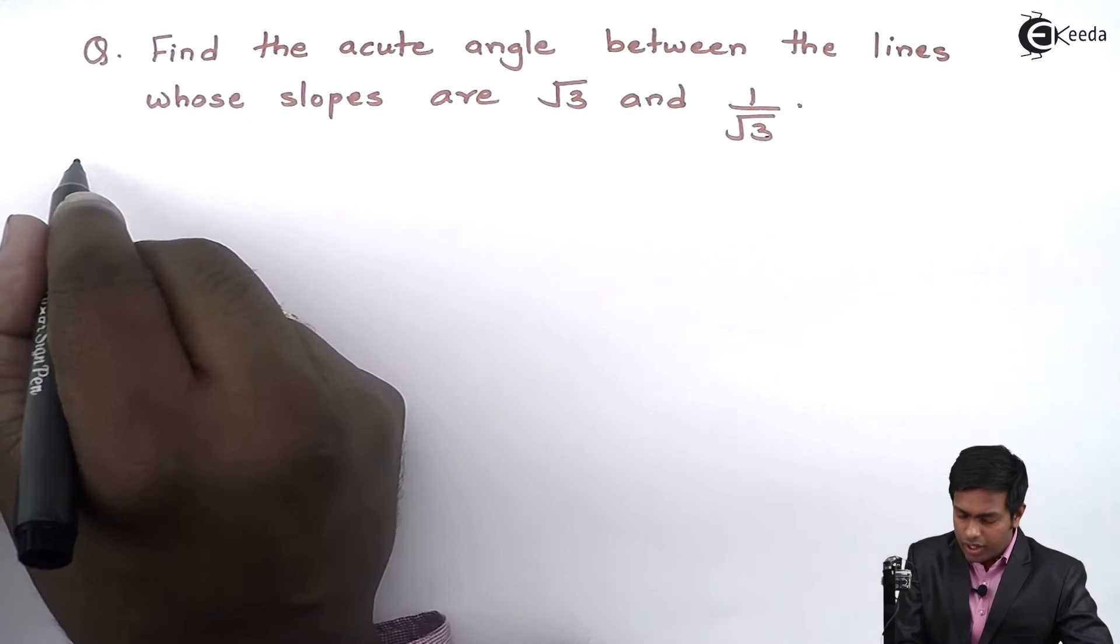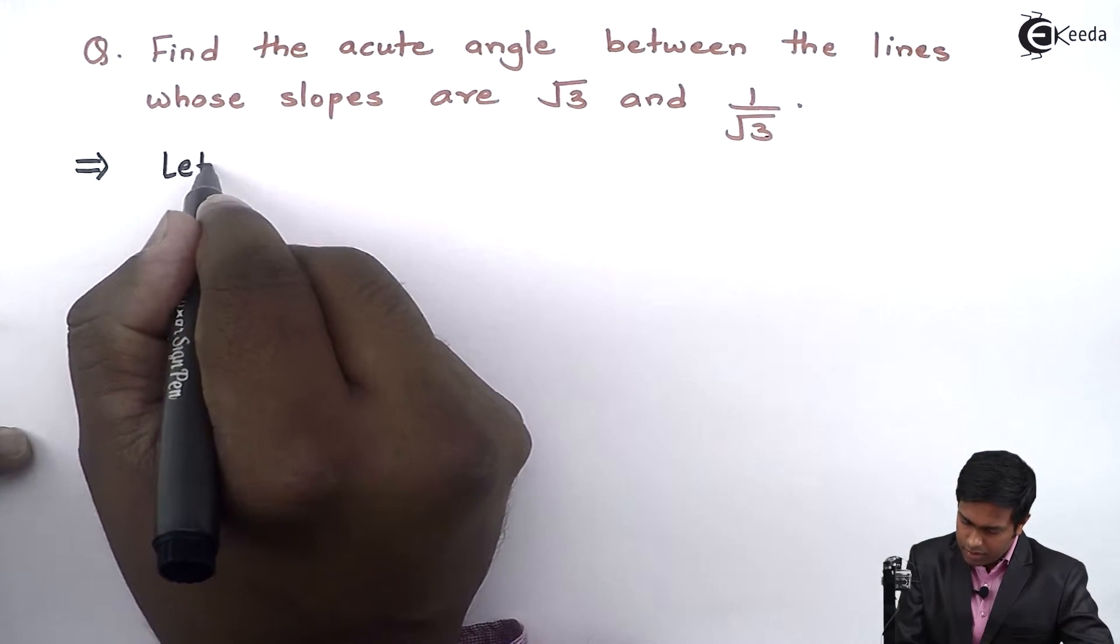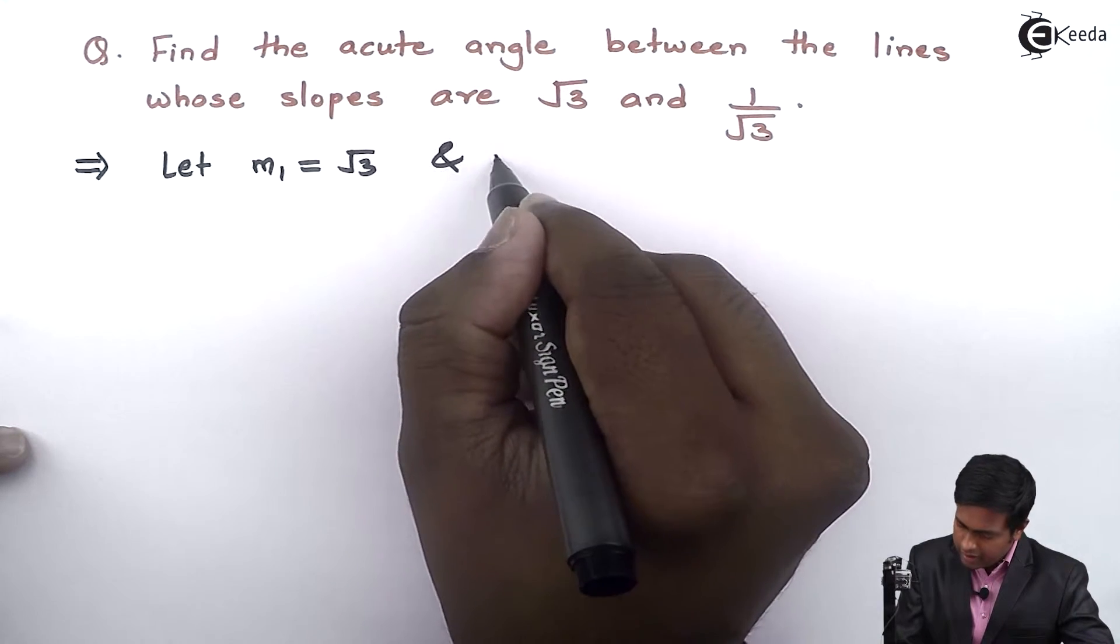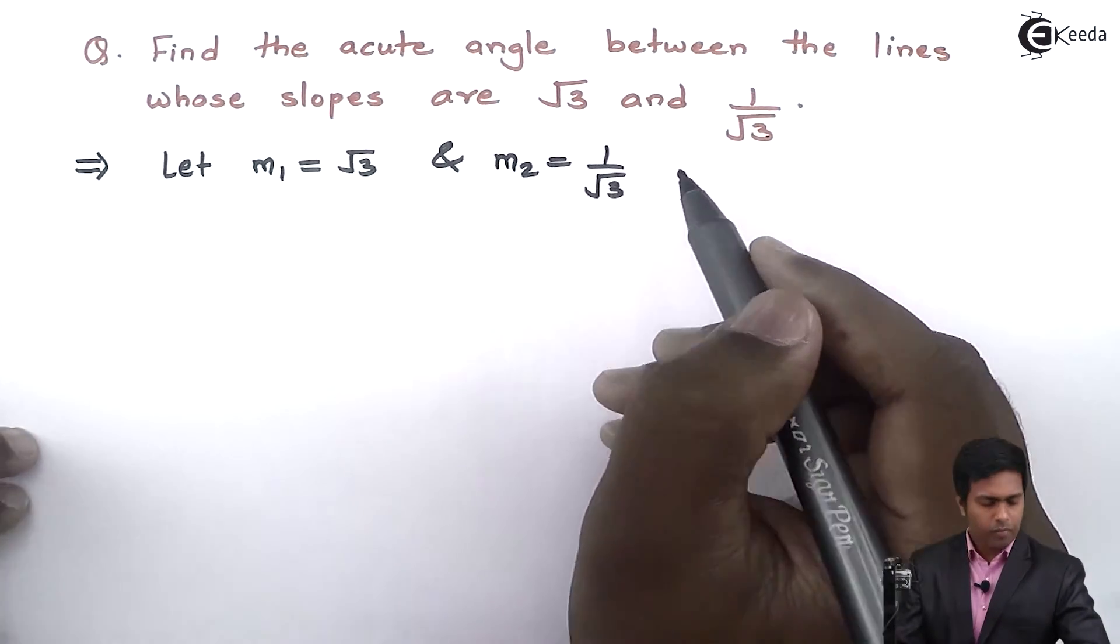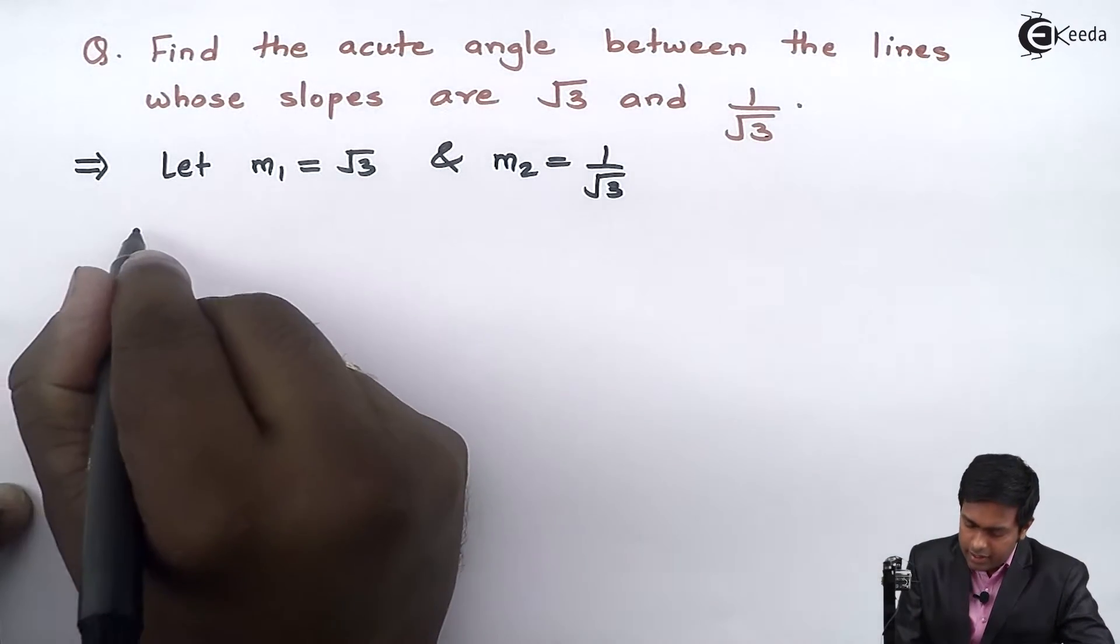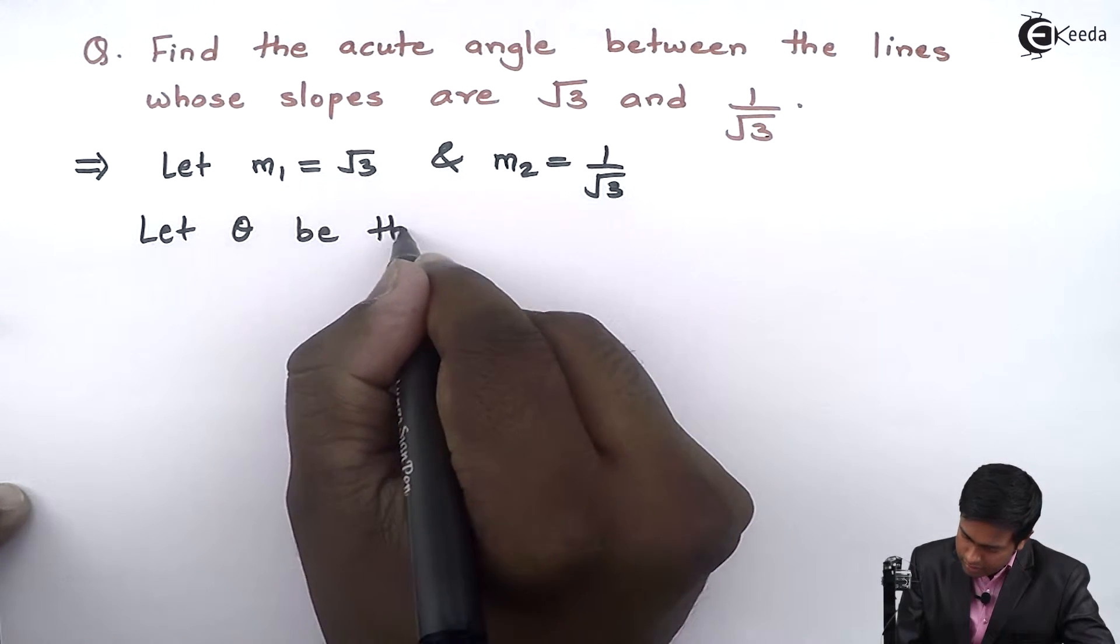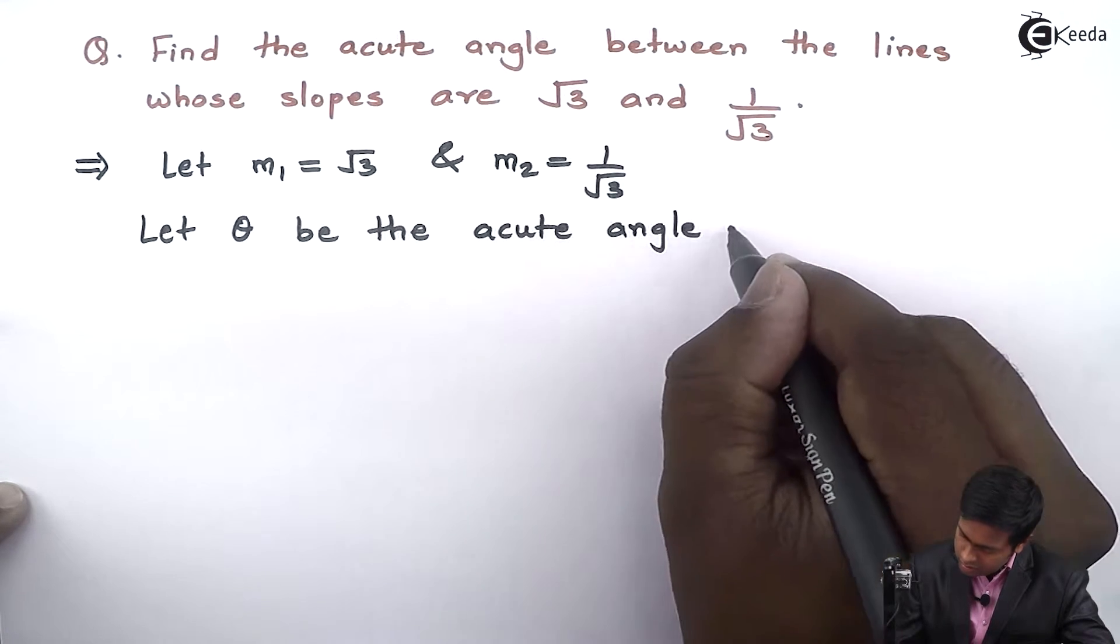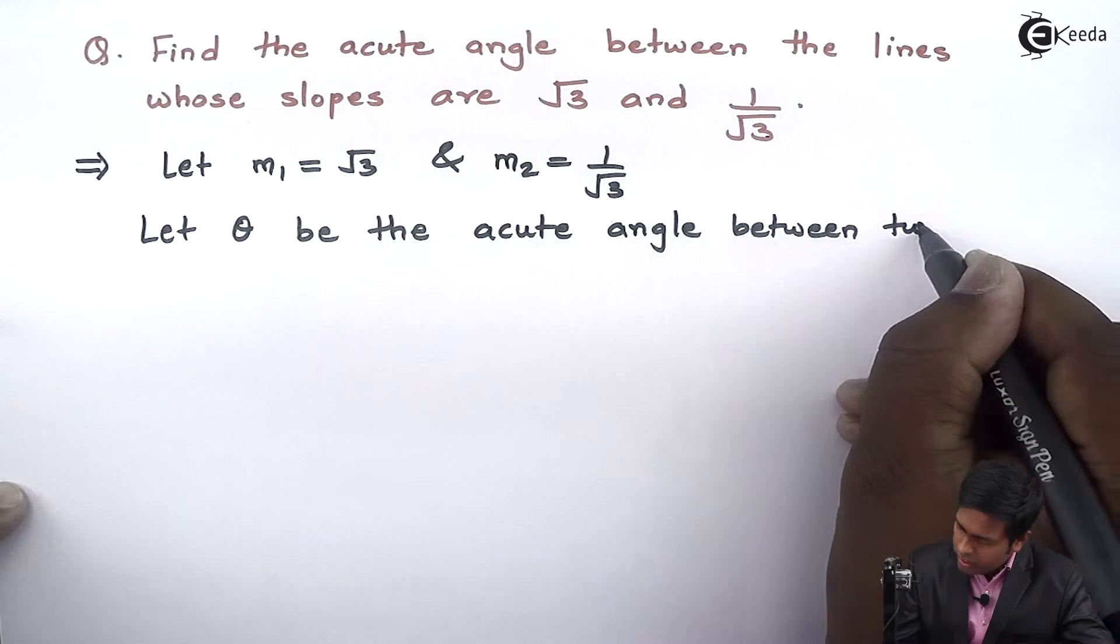So let's start. I'll assume the first slope as m₁ = √3 and m₂ = 1/√3. Next, let θ be the acute angle between the two lines.